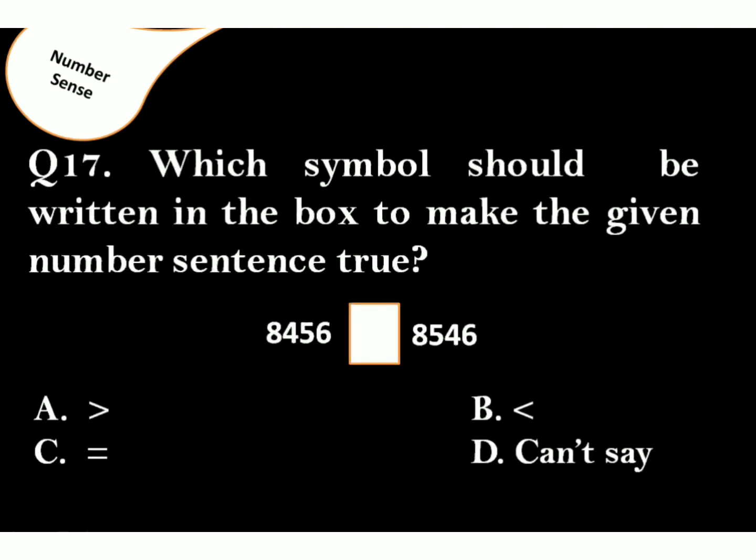Which symbol should be written in the box to make the given number sentence true? The correct answer is option B. Here at the thousands place, the numbers are same 8. So, we will check the hundreds place. Here, 4 is less than 5. Hence, option B is the correct answer.